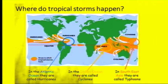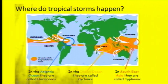So where do tropical storms happen? There are three main names for tropical storms, but they all mean exactly the same thing — they just form in different oceans. Hurricanes form in the Atlantic Ocean, cyclones form in the Indian Ocean, and typhoons form in the Pacific Ocean.